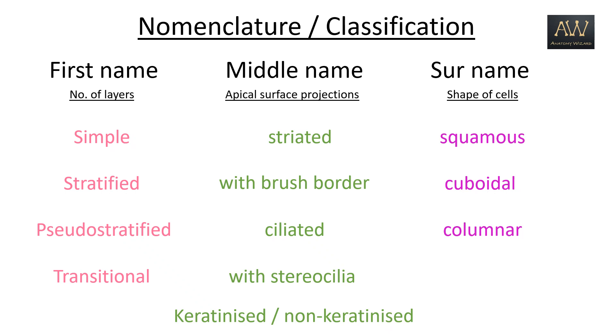We now come to the end of this video with some examples of the common sites of occurrence of various types of epithelial tissues in the body. In the following videos, we shall look at a methodical approach to identify various types of epithelial tissues.